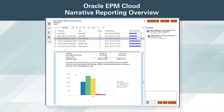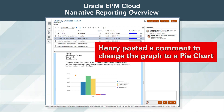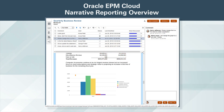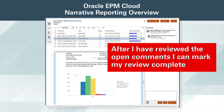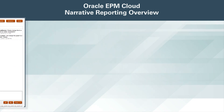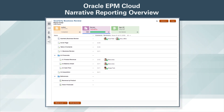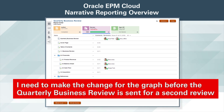Several comments have been posted about various items in the report package. Henry posted a comment to change the graph to a pie chart. I will reply to Henry to let him know that I will change the chart type. After I have reviewed the open comments, I can mark my review complete. The first review is 100% complete, and I need to make the change for the graph before the quarterly business review is sent for a second review.